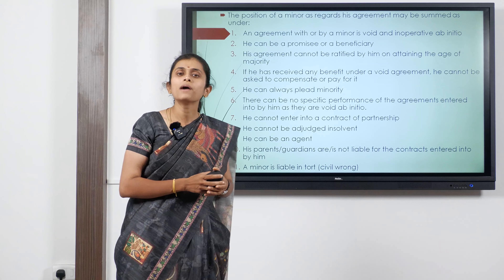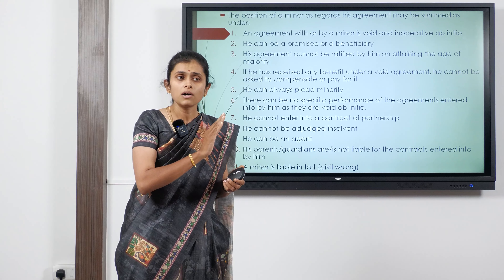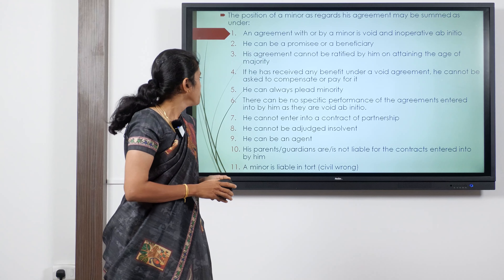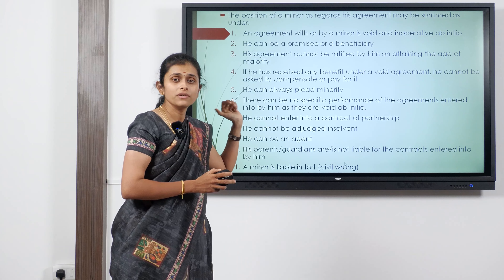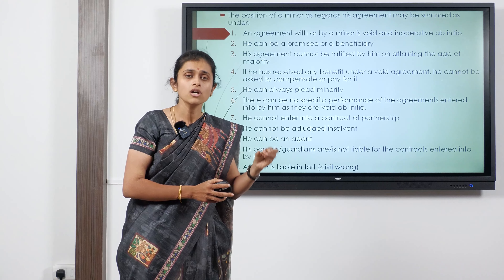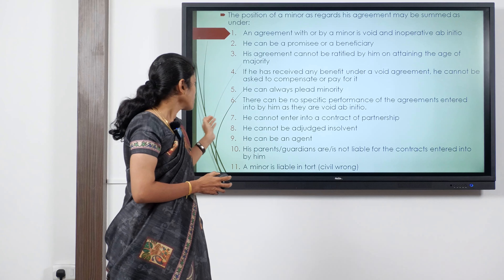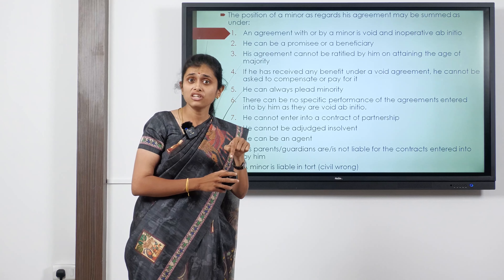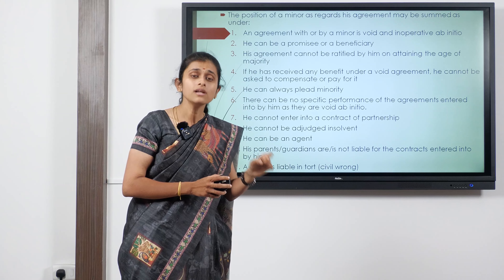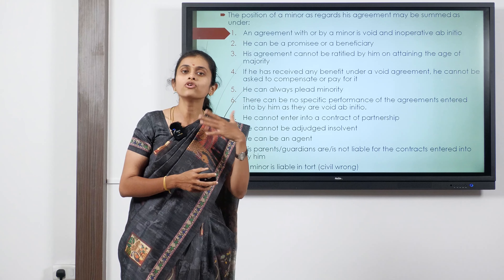Seventh, a minor cannot enter into a contract of partnership. Minors are entitled only to the benefits from a partnership — a minor cannot be made part of a partnership for all liabilities and losses. Eighth, a minor cannot be adjudged as insolvent because no legal obligation has been put against him. Ninth, a minor can be an agent — he can act on behalf of somebody, and the principal will be held responsible for all acts of the minor.